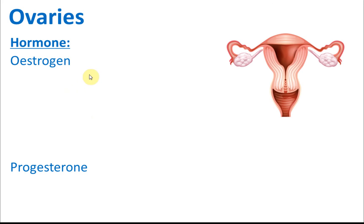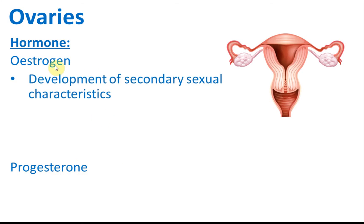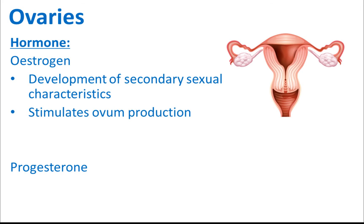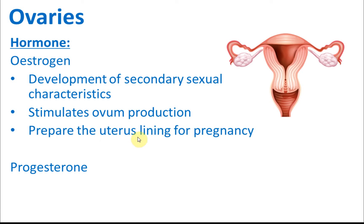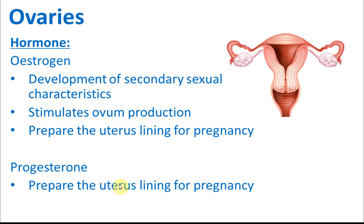The ovaries secrete two types of hormones: oestrogen and progesterone. Oestrogen controls the development of secondary sexual characteristics in females, stimulates ovum production, and prepares the uterus lining for pregnancy. Progesterone also prepares the uterus lining for pregnancy and controls the menstrual cycle.